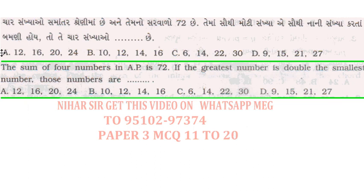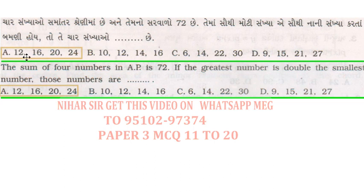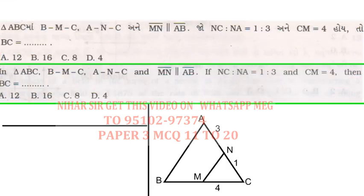Okay, this is how to calculate the concept. All options add to total 72, I think: 12, 16, 20, 24, total 72, right? In triangle ABC, MN is parallel to AB, and CM is equal to 4, then find BC. Now it's very easy to make the formula.